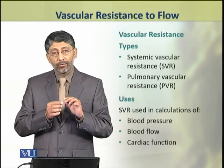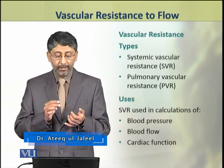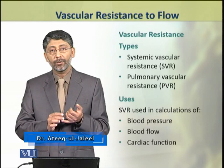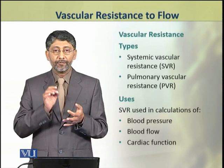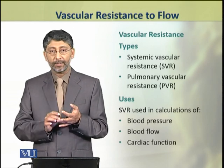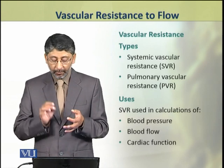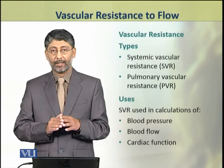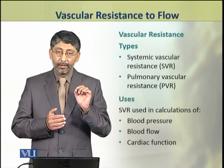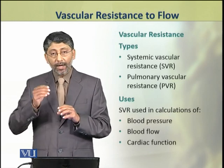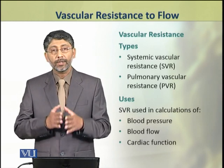There are two types of vascular resistance. The resistance offered by the systemic circuit is known as systemic vascular resistance, and the resistance offered by the blood vessels of the pulmonary circuit is known as pulmonary vascular resistance. Systemic vascular resistance is used in the calculations of blood pressure, blood flow, and cardiac functions.